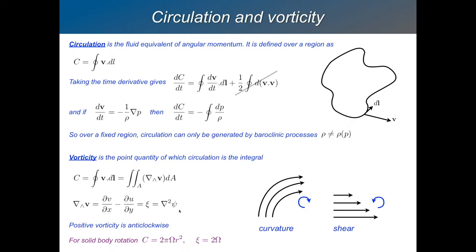What does vorticity mean? The best way to think about what vorticity is in a flow is to imagine that you drop a paddle wheel — a cross-type thing — into the flow. Is it going to turn around on its own axis or not? Imagine you drop it into a flow which is clearly turning — the paddle wheel will start to turn as well. If it's turning clockwise, that's negative vorticity. Anticlockwise is positive vorticity. In a shear flow, you can see that this flow is faster than that. Drop something in, and it's going to go around anticlockwise — it's going to have positive vorticity.